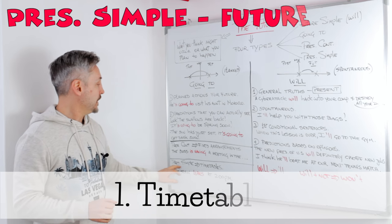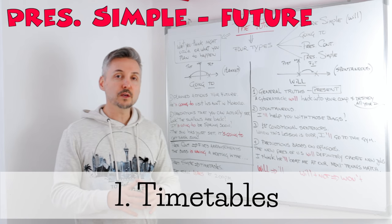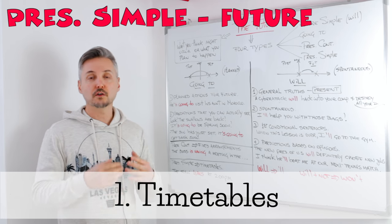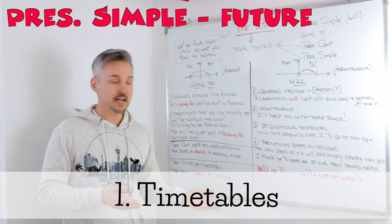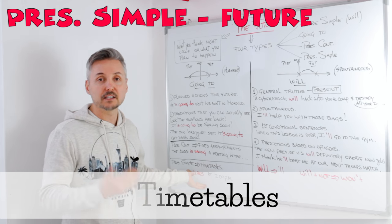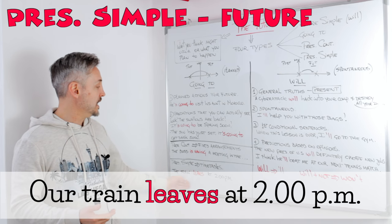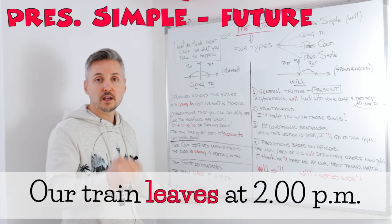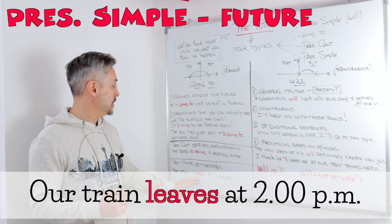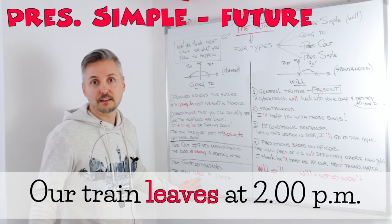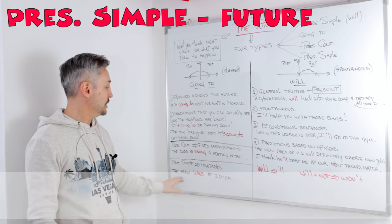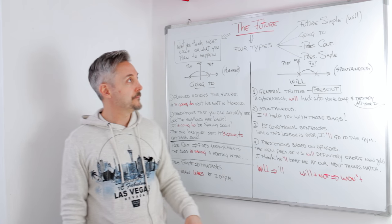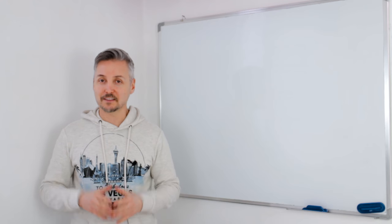The present simple is used for timetables — for example, a train or plane timetable. 'The train leaves at 2 p.m.' This is future, but the present simple is used here to indicate the future.